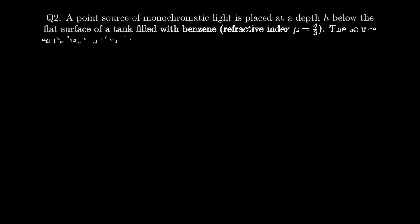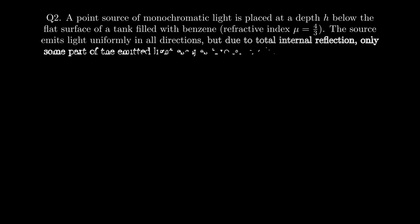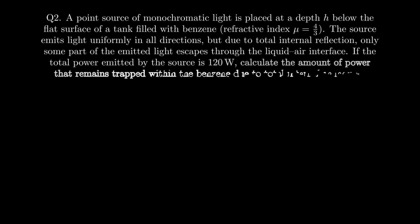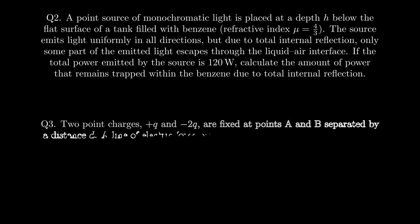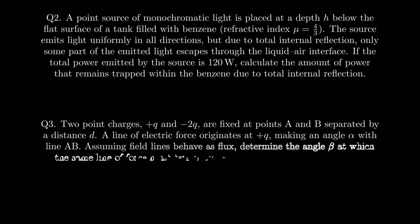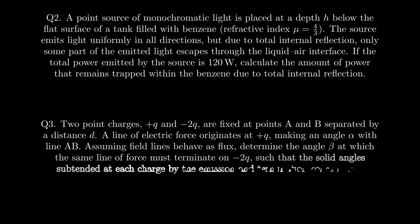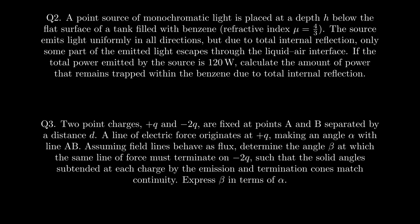Let's wrap up the video with a couple of problems for you to try on your own. In question 2, a light source is submerged in benzene. You'll use the concept of critical angle and solid angle to determine how much light remains trapped due to the total internal reflection. And in question 3, we revisit the idea of electric field lines behaving like flux. A field line leaves one charge at a known angle. Your task is to figure out the angle at which it should terminate on a second charge based on solid angle continuity.